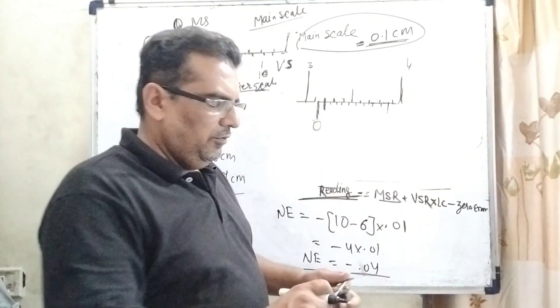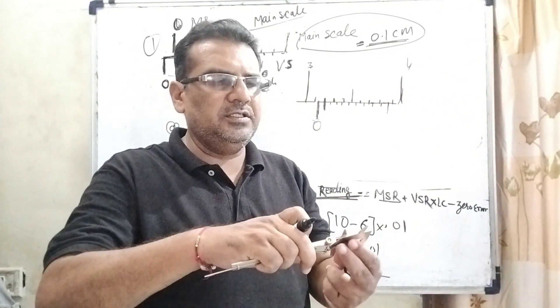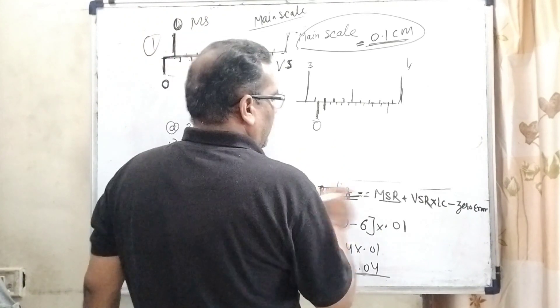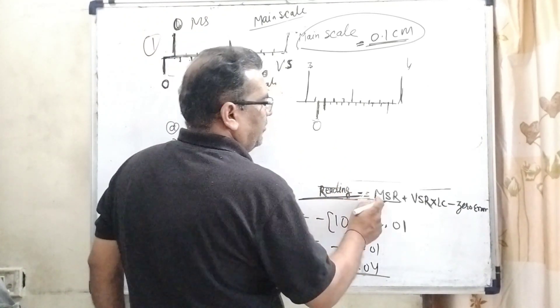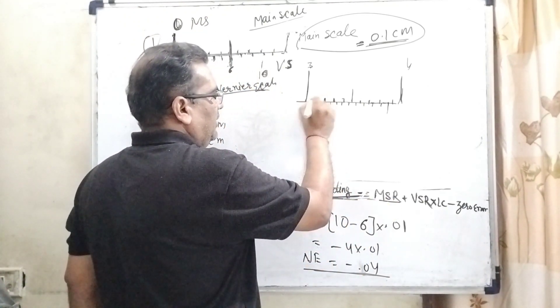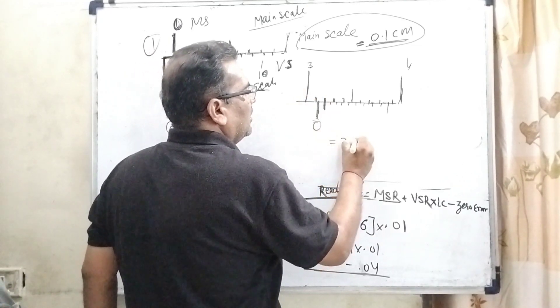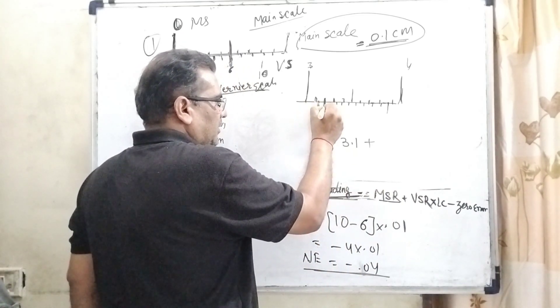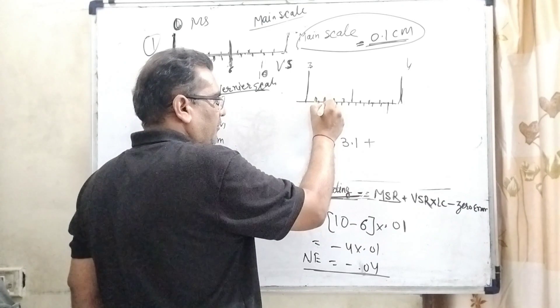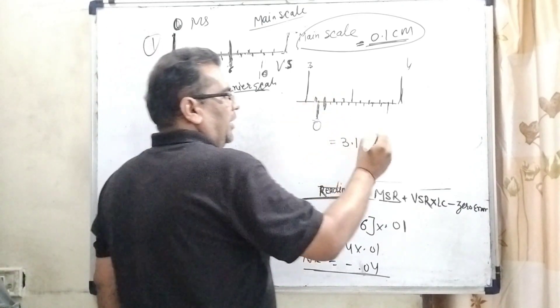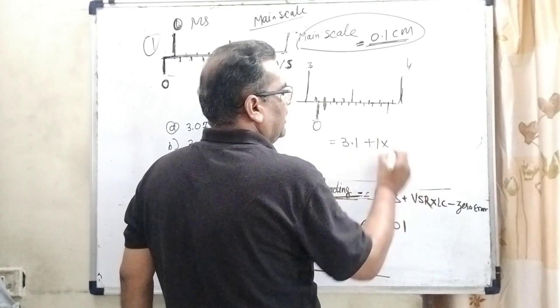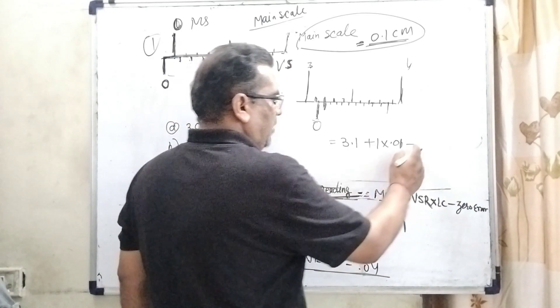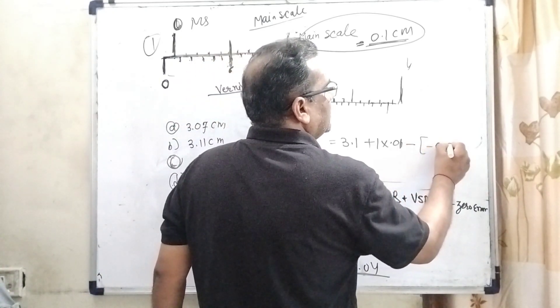Now for the final reading, when the spherical object is fixed like this, you can see here. The reading: main scale reading is 3.1 plus Vernier scale reading. Here, zero and one - this one point is overlapping or we can say matching. So here 1 is the Vernier scale reading, and the least count is 0.01, and the zero error is what? Here minus 0.04.